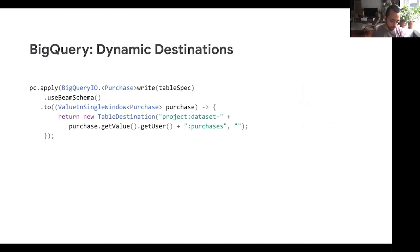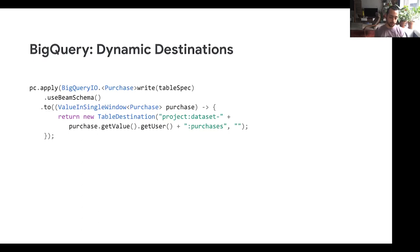What we can do — supported in Java and Python — is depending on the contents of the row we're receiving, we can select the destination for that row. In Java, we're using a purchase and the user name from the purchase to select the table destination. We can do the same thing in Python by passing a lambda or some kind of function that will inspect the input row and select the table destination.